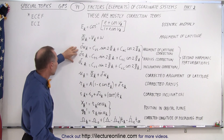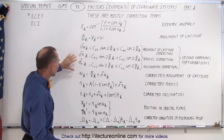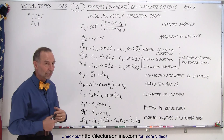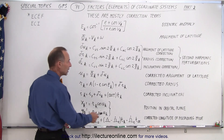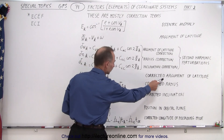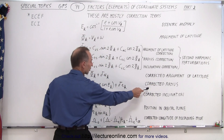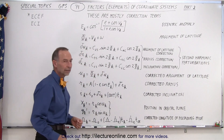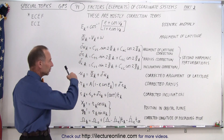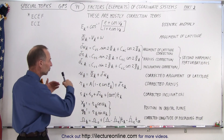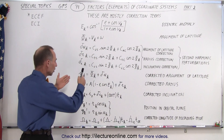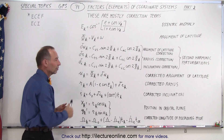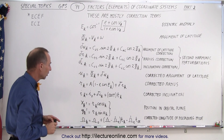Notice that these three values are then used in parameters to more accurately come up with the corrected argument of latitude, the corrected radius, and the corrected inclination. So we add those second harmonic perturbations to our calculations to come up with even more correct values for those various parameters.